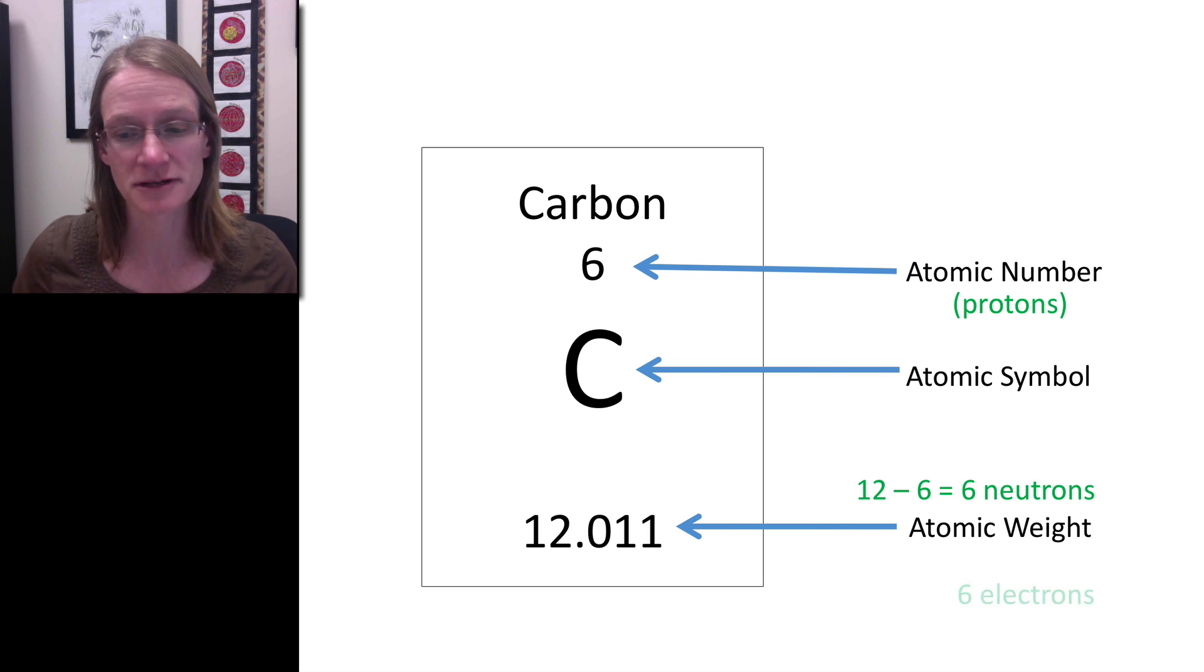We've been able to figure out all the pieces of a carbon atom just by looking at a periodic table. You can do that with any of them, and it's always good practice to give that a try.